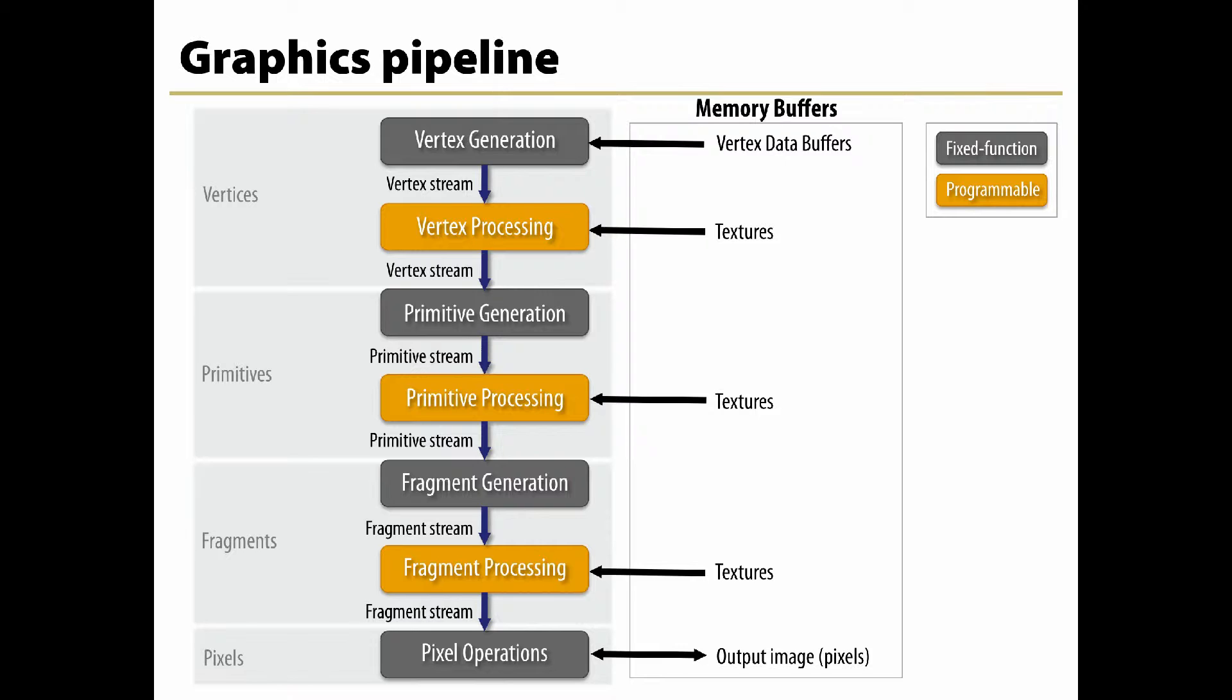The graphics pipeline is well suited to the rendering process because it allows the GPU to function as a stream processor, since all vertices and fragments can be thought of as independent. This allows all stages of the pipeline to be used simultaneously for different vertices or fragments as they work their way through the pipe. In addition to pipelining vertices and fragments, their independence allows graphics processors to use parallel processing units to process multiple vertices or fragments in a single stage of the pipeline at the same time.